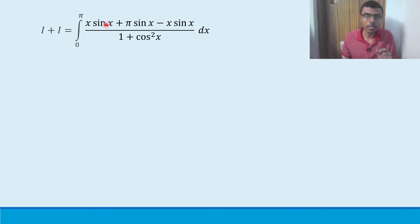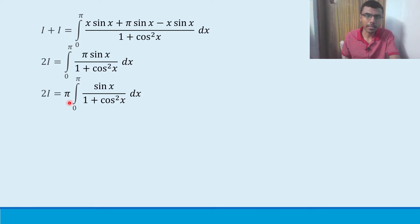In the next step, what I would get is this I plus I is 2I. And I can write both of them under one single integral. Integral 0 to pi, denominator will be 1 plus cos square x, and x sin x plus pi sin x minus x sin x. What I would get by doing this: x sin x and minus x sin x, they will cancel each other.